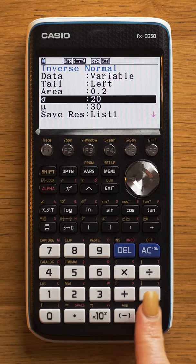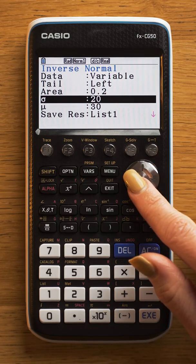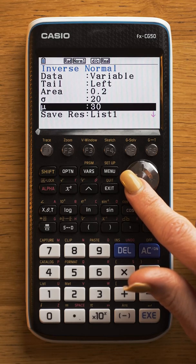Here you can type in the area of the tail. Sigma is your standard deviation of the distribution, and mu is your mean.